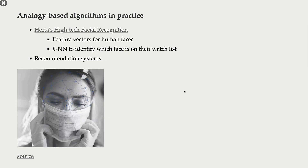You can imagine this idea being used in facial recognition systems and recommendation systems. For example, you can imagine having a bunch of faces on your watch list, and a new face comes up and you want to check whether that new face is on your watch list or not. Another example is recommendation systems, where you usually want to find similar users or similar items. These are the most relevant applications for analogy-based algorithms.